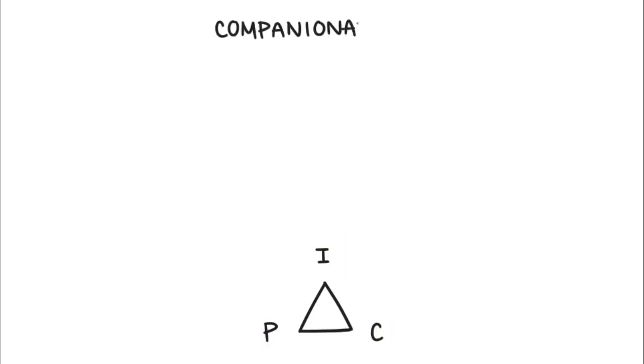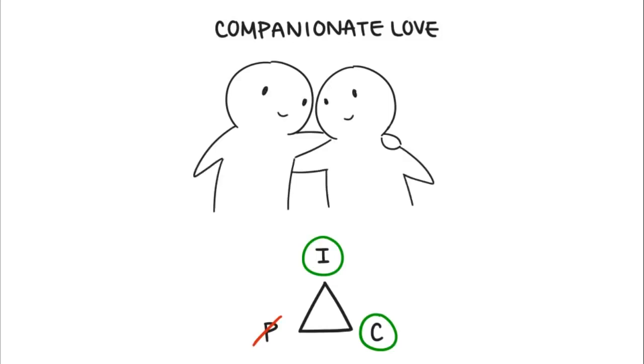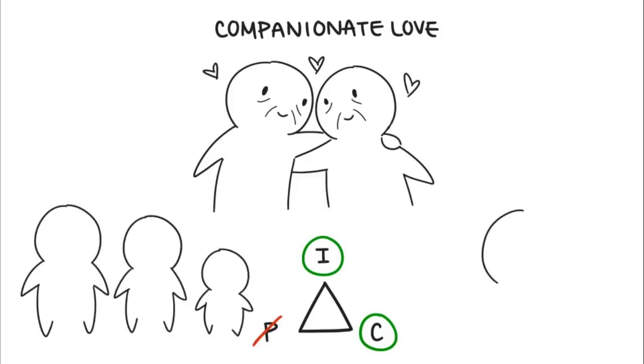Six: Companionate love. Companionate love is characterized by a combination of intimacy and commitment, and the absence of passion. It's stronger than friendship love because of the addition of commitment. It's observed in long-term marriages, where you don't necessarily need passion in order to stay in love with your partner, because affection still remains. Companionate love can also be found among family members and close friends who have strong platonic friendships.